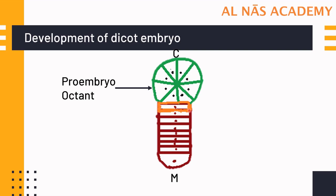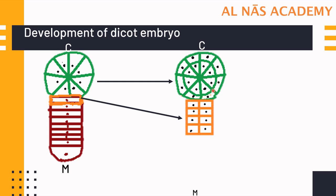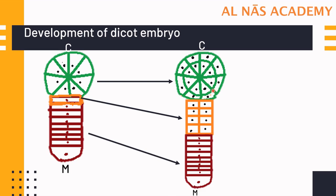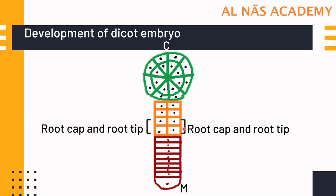The cell in direct contact with the pro-embryo acts as hypophysis. One more periclinal division in the pro-embryo results in the formation of outer cells and inner cells — a ring of outer cells gives rise to dermatogen, which gives rise to the epidermis. Hypophysis then divides to form eight cells, while the suspensor and haustorial cells remain. At this stage the embryo is known as the globular embryo. The four cells towards the suspensor will give rise to root cap and root tip; the upper four cells in contact with the pro-embryo will give rise to the root cortex.